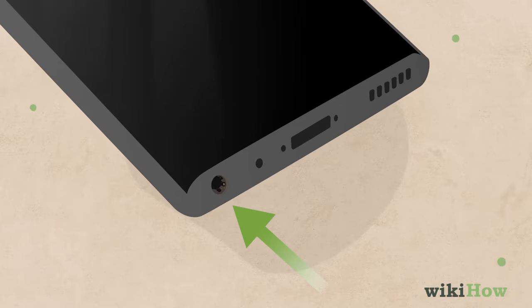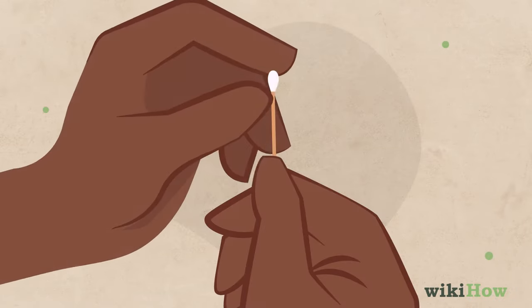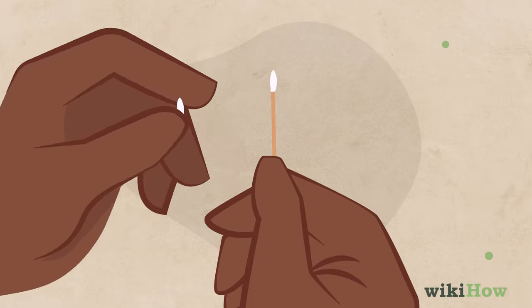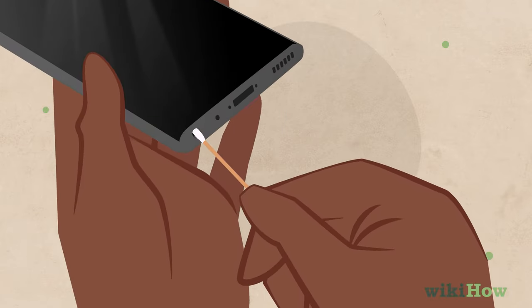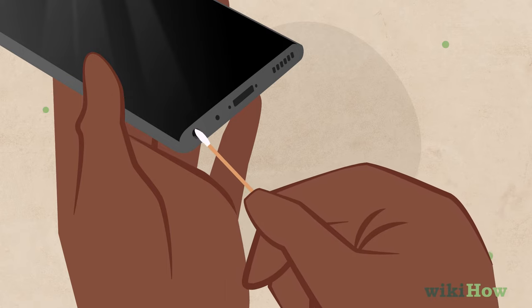For more stubborn debris, try taking a cotton swab and removing most of the cotton from the tip until it's small enough to fit inside the opening of the jack. Gently brush the opening of the jack with the swab to loosen the dirt inside.